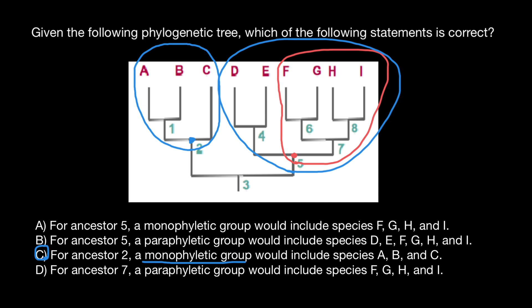Let's check the last statement, D: for ancestor seven, which is here — let's highlight it — a paraphyletic group would include species F, G, H, and I. Again, this is going to be an example of a monophyletic group, because for this common ancestor, these four species represent all the descendants. So this is a monophyletic group, not a paraphyletic group. Out of the four statements, only statement C is correct.